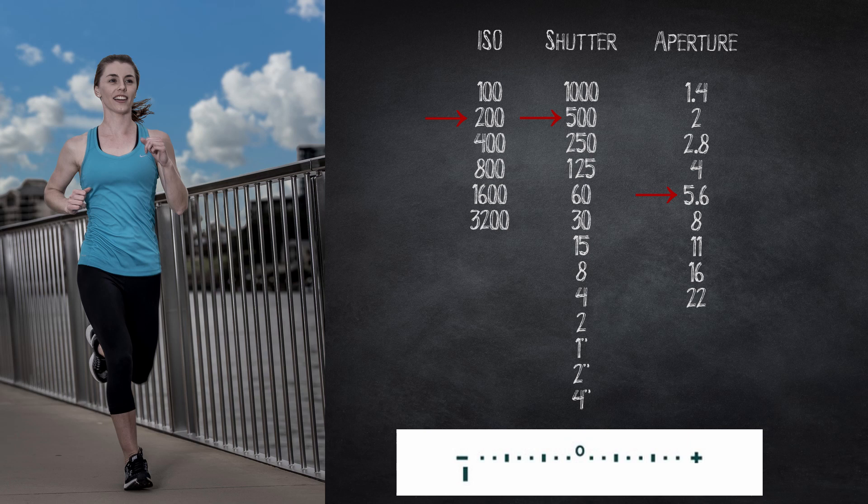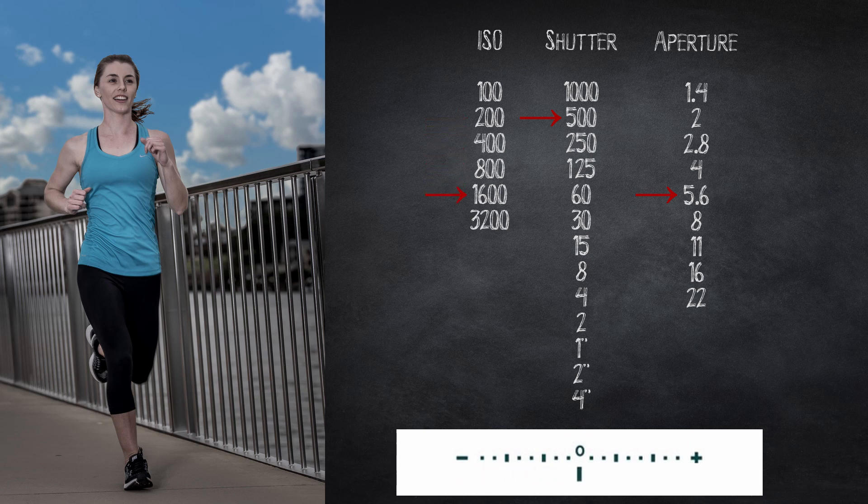So the only thing left is ISO. Needing three stops we increase the ISO from 200 to 1600, giving us the needed three stops of light to correct the exposure.